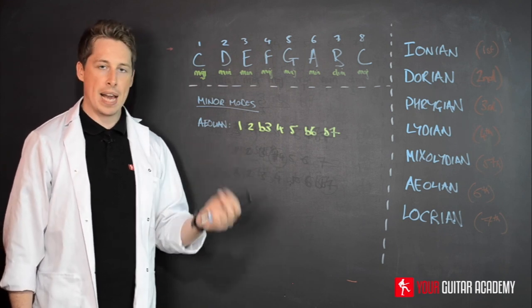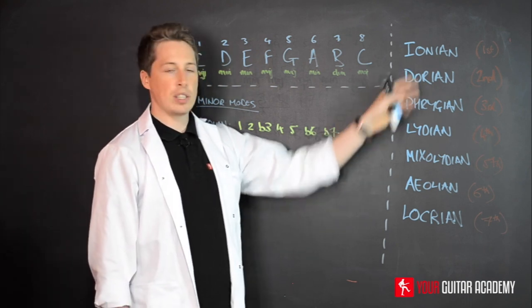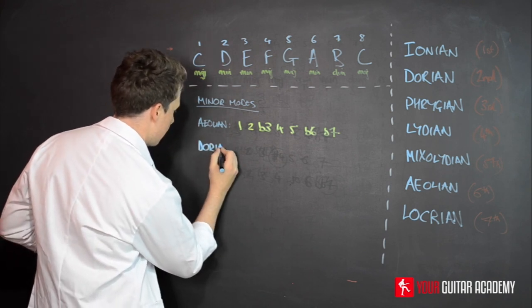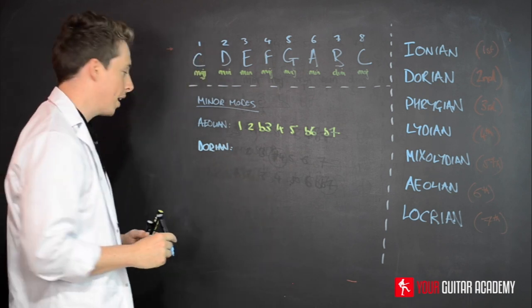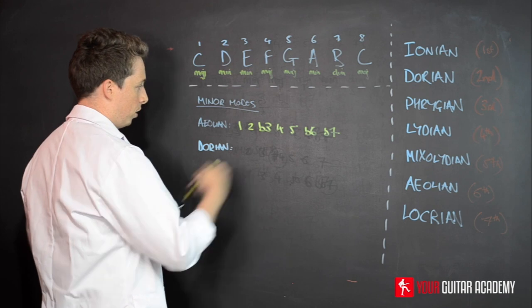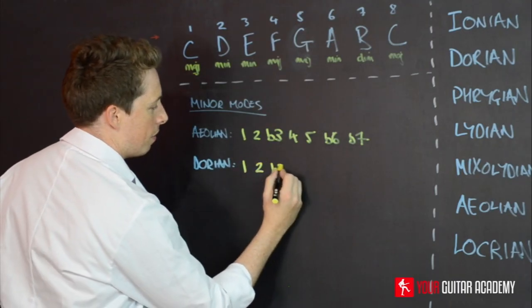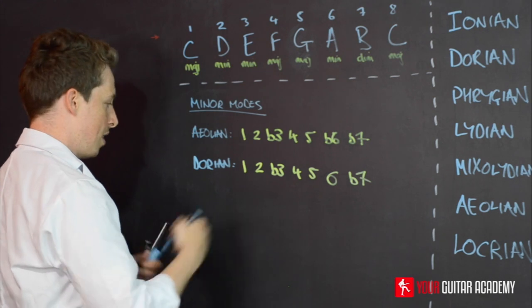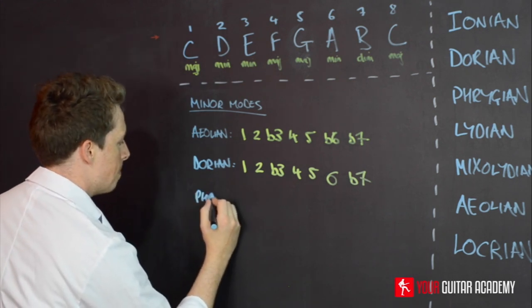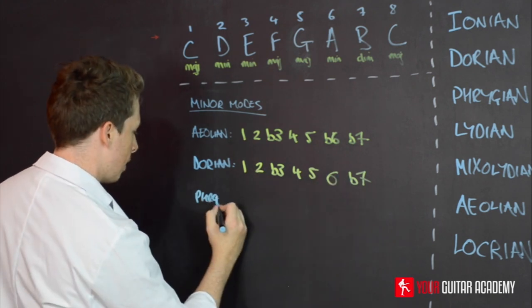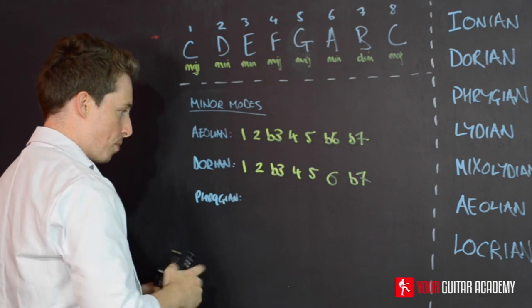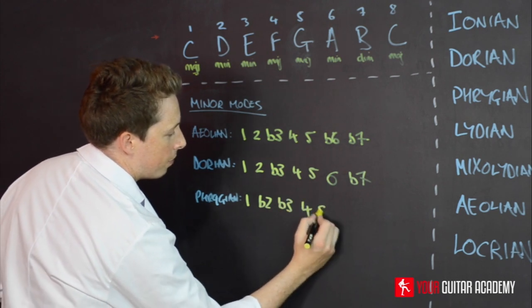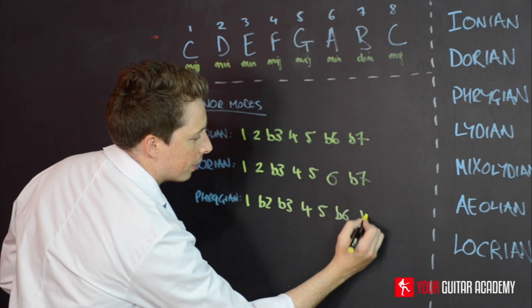So then after that, I'm going to put Dorian. So I'm just going to come down here and put the Dorian scale. And again, I'm going to do the full whack, which is root, second, flat third, fourth, fifth, sixth and flat seven. And then I'm going to put in the Phrygian. So hopefully these scale formulas are remembered now, obviously, I'm just doing this from memory. And the Phrygian looks like this: root, flat second, flat third, fourth, fifth, flat six, flat seven.